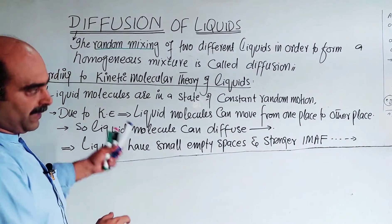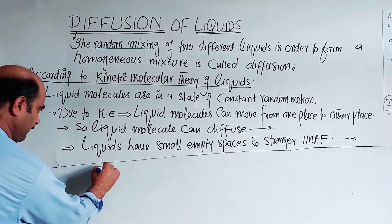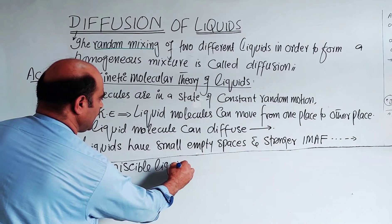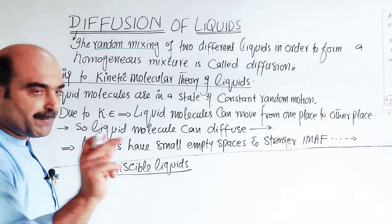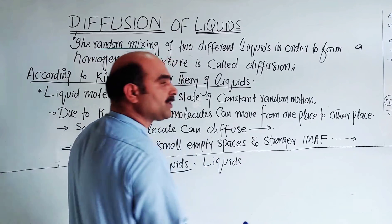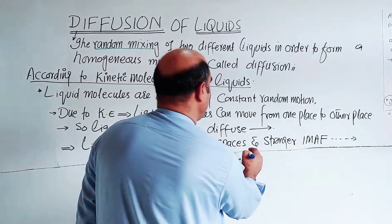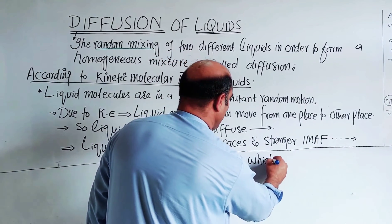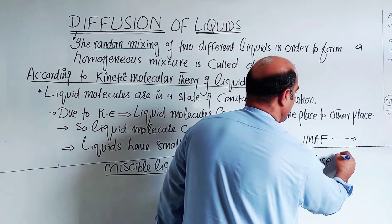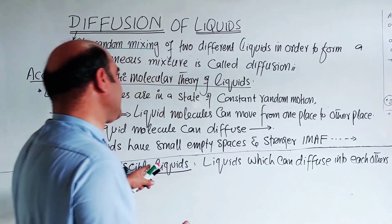Students, liquids that mix with each other to form a homogeneous mixture are called miscible liquids. Miscible liquids are liquids which are miscible into each other at all proportions, or liquids which can diffuse into each other.